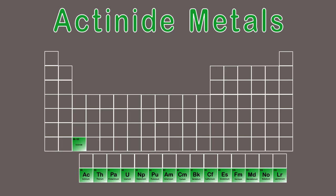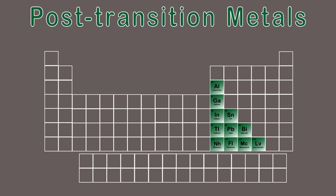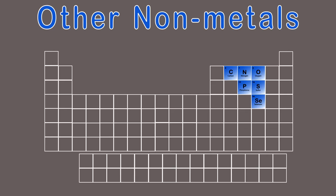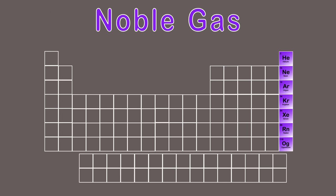Lanthanide and actinide metals, you knew, post-transition metals and metalloids too. There's other non-metals and then the halogens, and here is the noble gas elements.